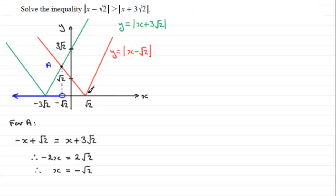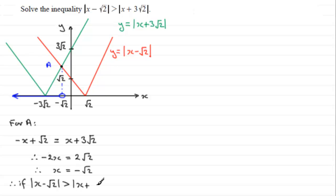So in conclusion, if the mod of x minus root 2 is to be greater than the mod of x plus 3 root 2, it follows that x must be less than minus root 2.